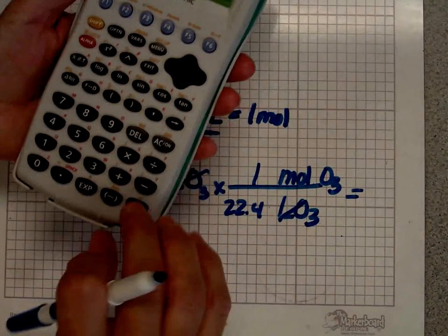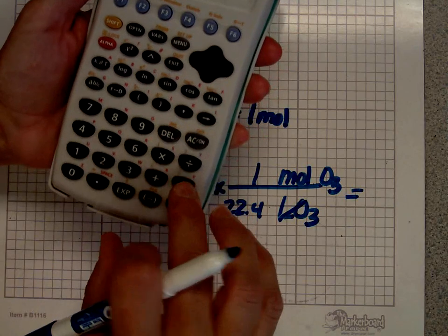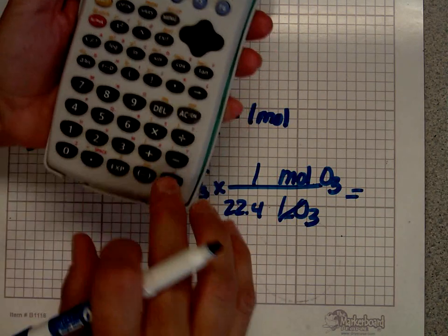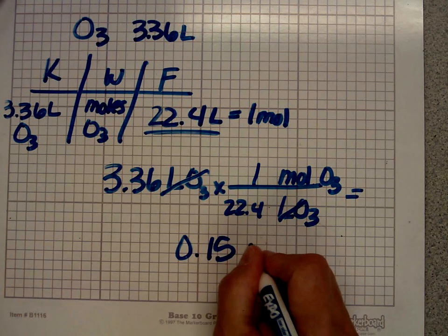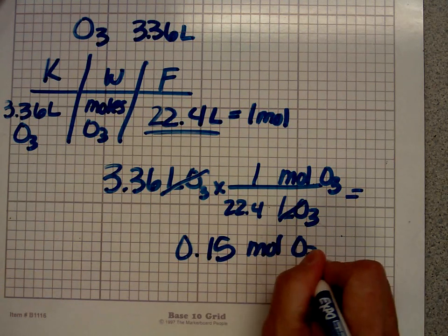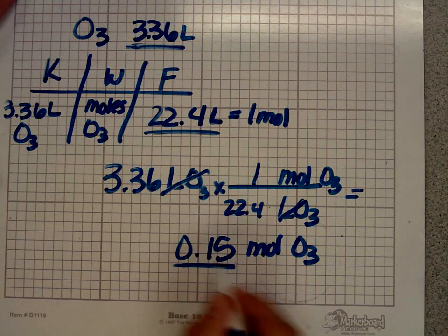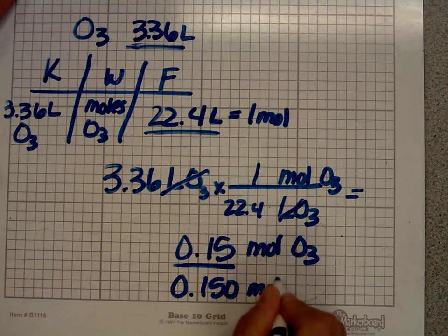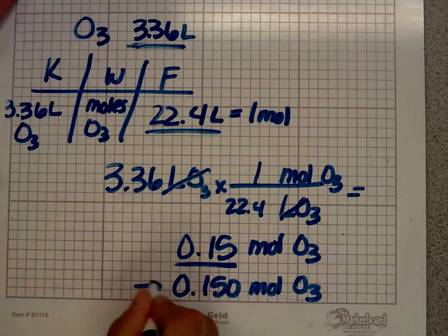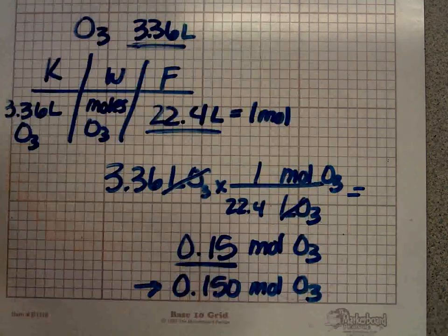Let's do that in the calculator: 3.36 divided by 22.4, and I end up with 0.15 moles of ozone. The important thing is this is three significant figures and this only has two, so what I really have is 0.150 moles of O3. If you're not sure how to count significant figures, watch the markerboard video on significant figures. Let's do one more example.